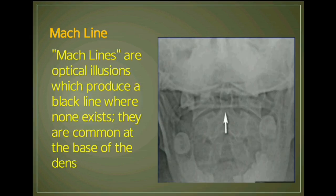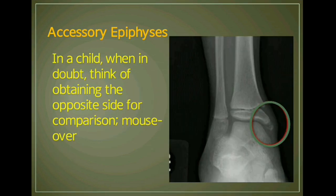Mach lines are optical illusions which produce a black line where none exists; they are common at the base of the dens. Accessory epiphysis: in a child, when in doubt, consider obtaining the opposite side for comparison.